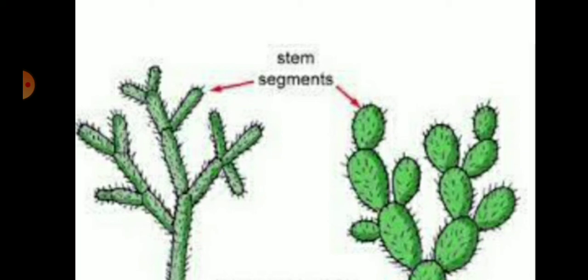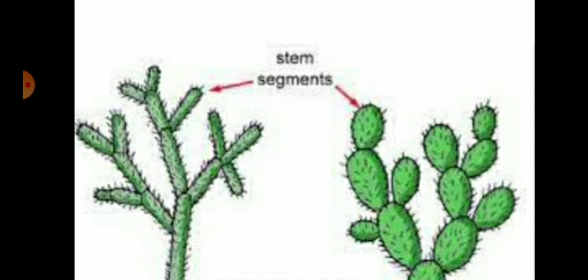Xerophytes have a deep taproot system for efficient absorption of water from deep soil. The leaves are reduced to spines to reduce water loss due to transpiration. The stomata are sunken, further reducing the rate of transpiration. The stomata are closed during the daytime and open during the night, which also helps in conservation of water.